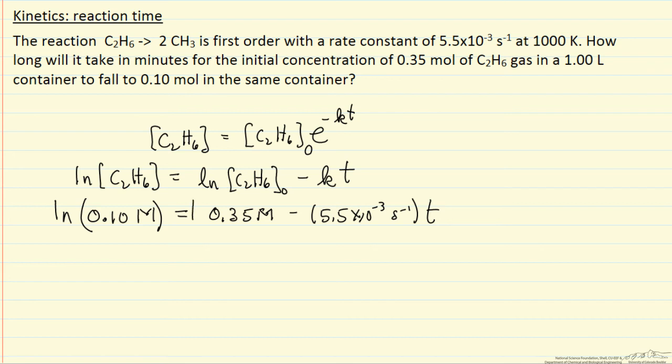So normally we would look at this and say we can't take the log of dimensional numbers that are not dimensional, but we could rearrange this. It's log of 0.10 molar over 0.35 molar. Because when I subtract logs, that's the same as the log of the ratio. Now the units cancel fine.